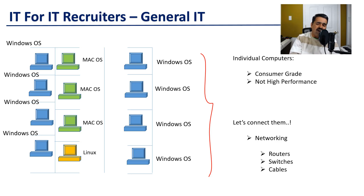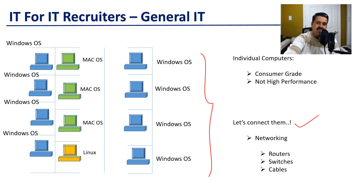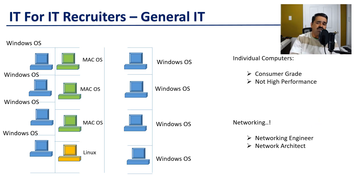But now we need instant collaboration between the employees. Normally every employee will be part of a team, and those teams need to interact with each other almost instantaneously. So what do we do? Let's connect all these computers using networking. There are several components involved in networking such as routers, switches, and cables. While we are not going to discuss networking in detail, we can sense that this presents us an opportunity to generate additional leads.